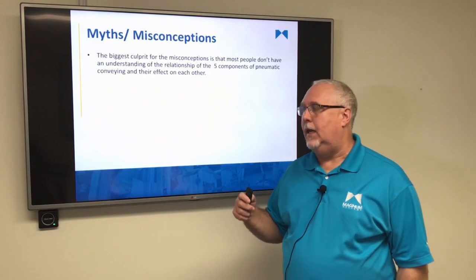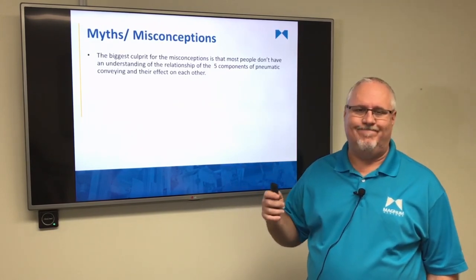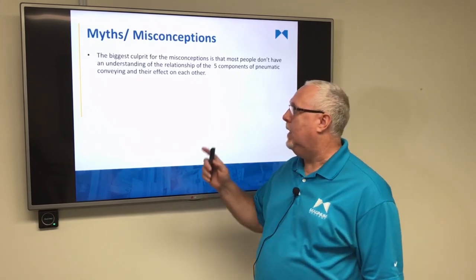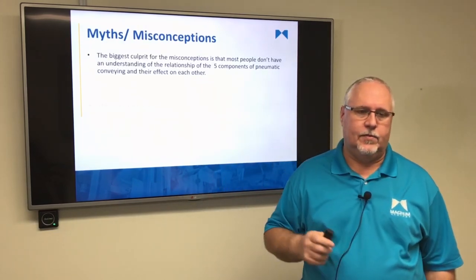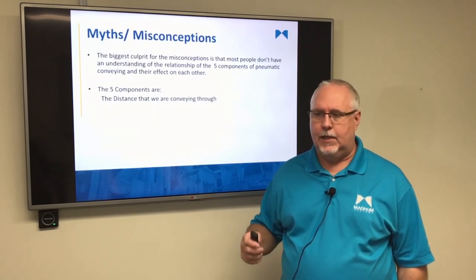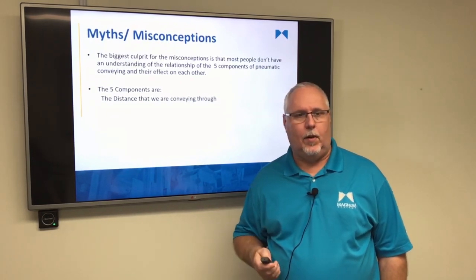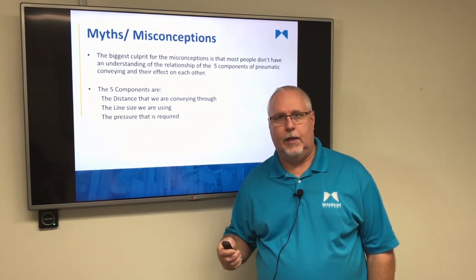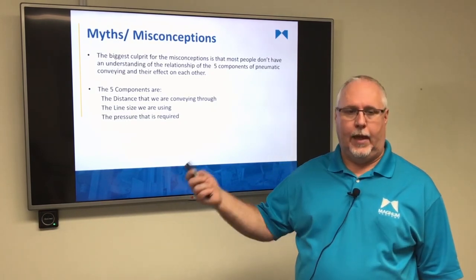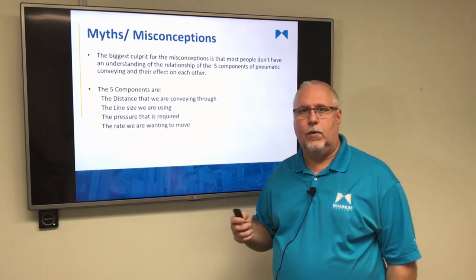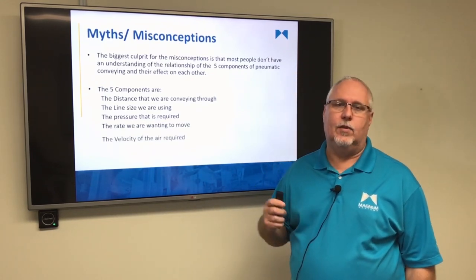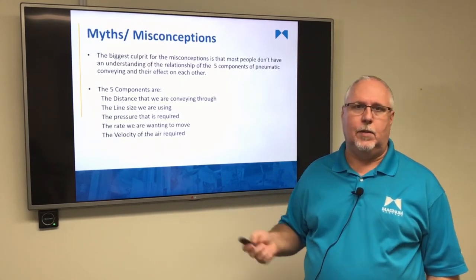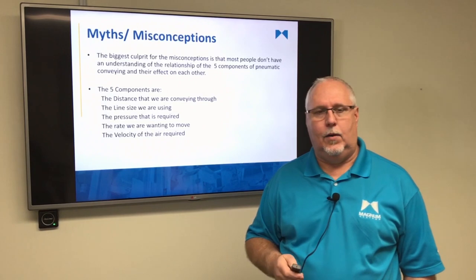The reason some of those definitions are a little bit unclear is because there are five components in a pneumatic conveying system: the distance you have to convey the product, the line size you're conveying through, the pressure required to do the work over that distance, the rate you're trying to move, and the velocity of the air. As you change one, something has to change with the others.